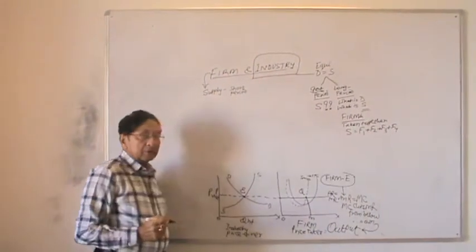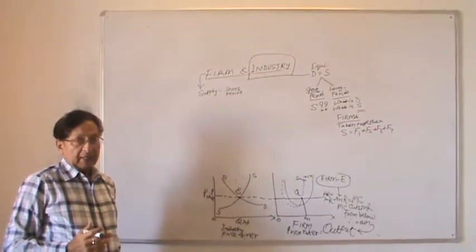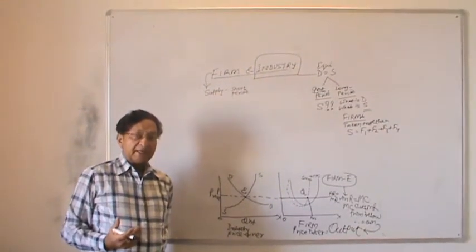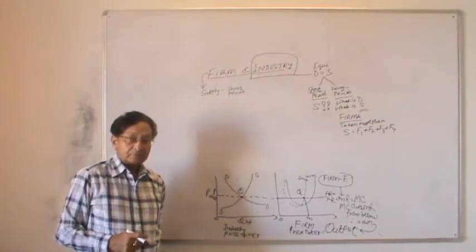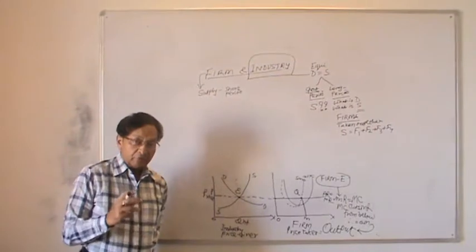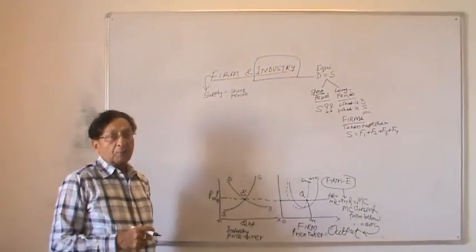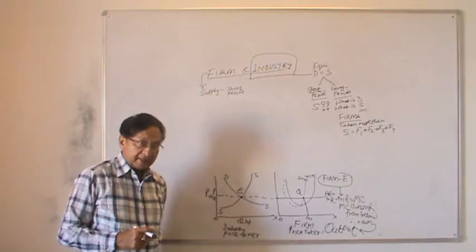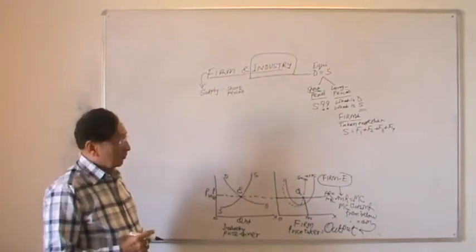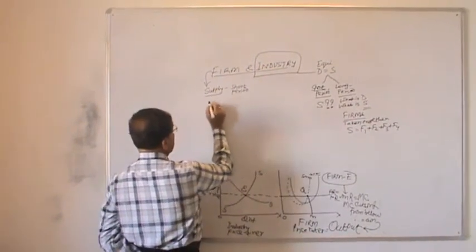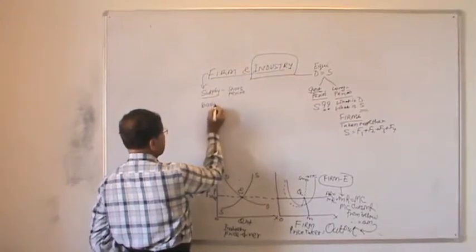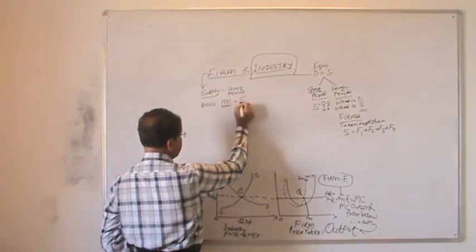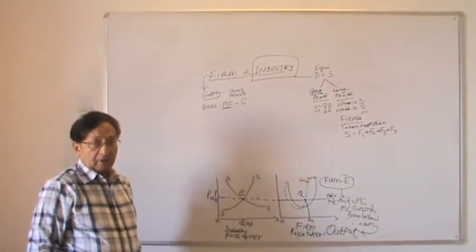Therefore, we will have to find out how and at what price firms are prepared to supply in the short period. Here we have to concentrate on the possible supply by a firm. It should be clear that firms will make a supply, and the basis will be marginal cost. Simply, marginal cost is the supply curve.